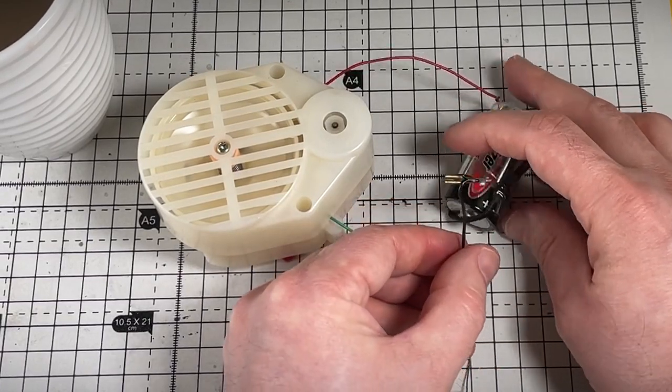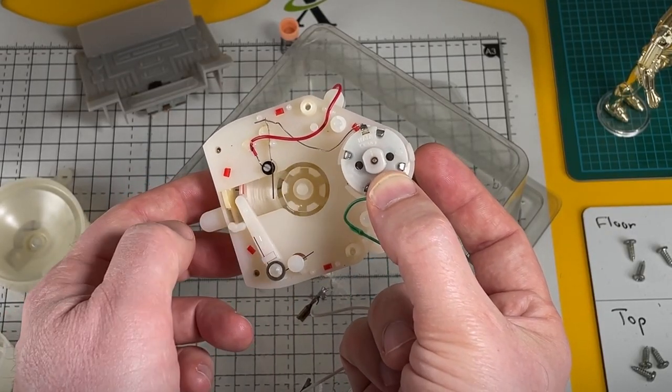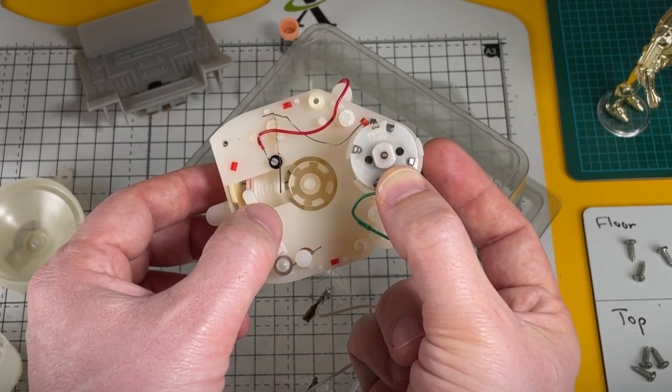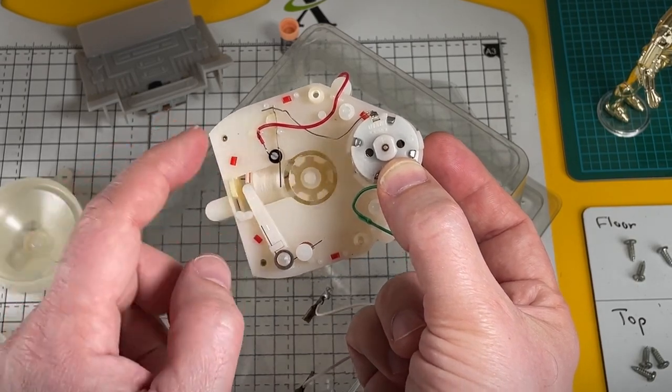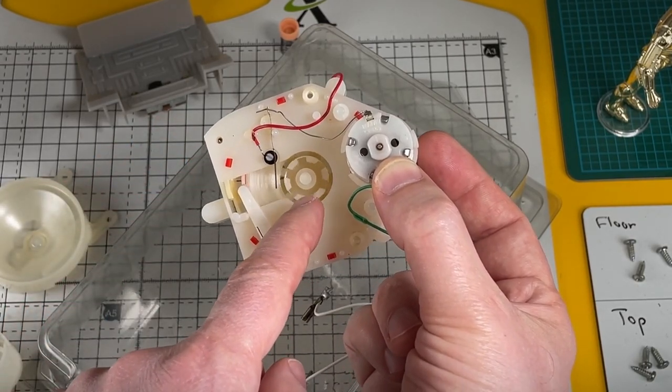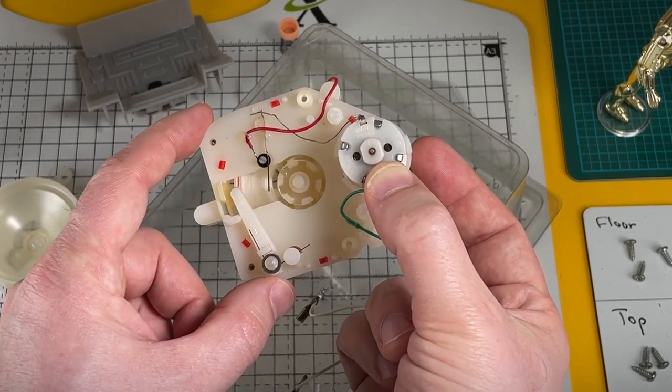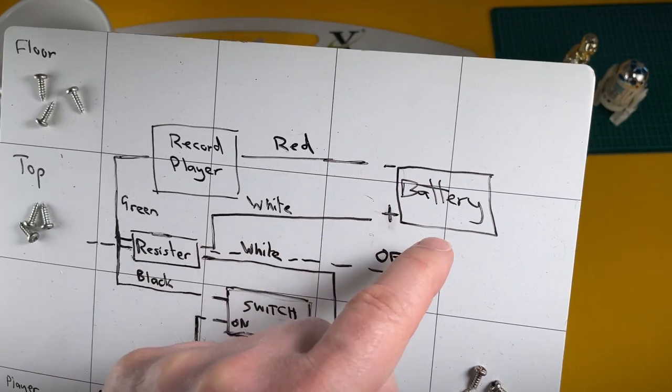Sounds like I'm taking chunks out of the record. Motor's running fine, record is spinning well. Let's see if we engage the needle. No. What's going on? Of course, record is spinning in the wrong direction. It should be going clockwise and it's currently going anti-clockwise.